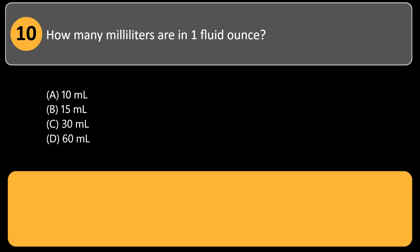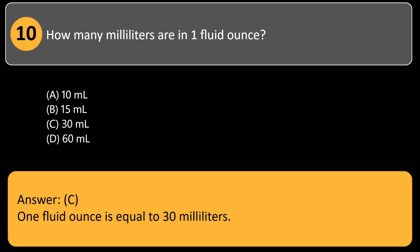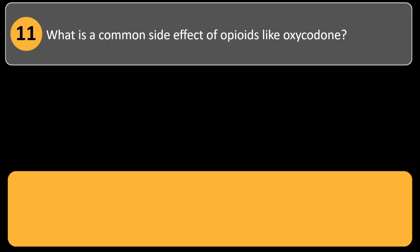How many milliliters are in one fluid ounce? A) 10 milliliters, B) 15 milliliters, C) 30 milliliters, D) 60 milliliters. Answer: C. One fluid ounce is equal to 30 milliliters.